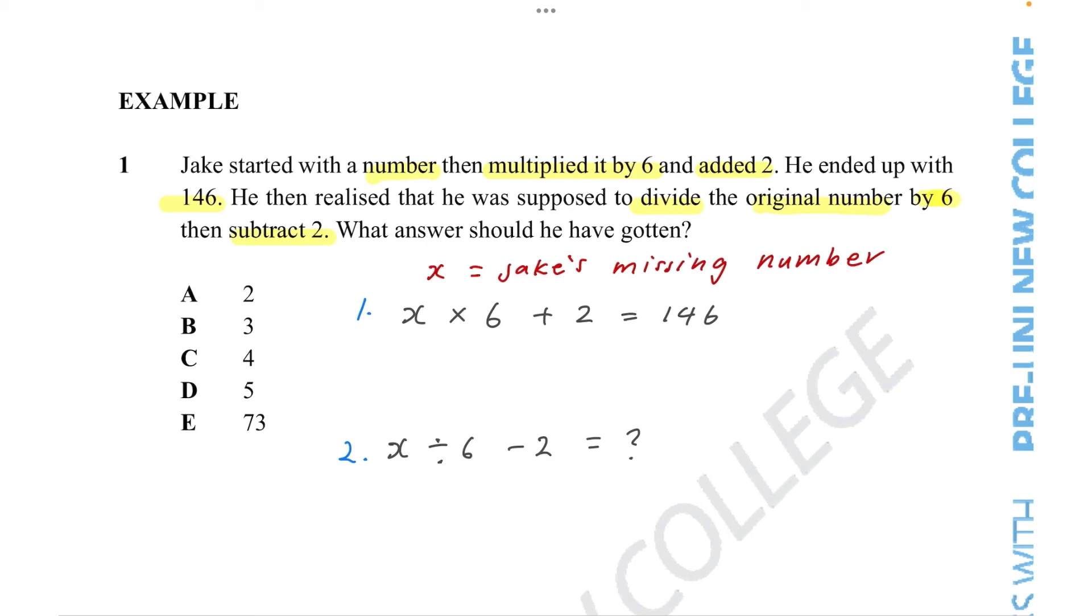Firstly, like we learned, we need to isolate the x. In order to do this, we can firstly get rid of the plus 2 by minusing 2, because plus is the opposite of minus. And since we're doing minus 2 on one side, we need to minus 2 on the other. So then we get x times 6 plus 2 and minus 2 is 0.